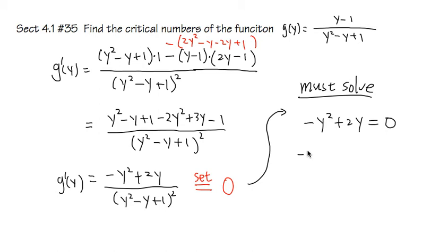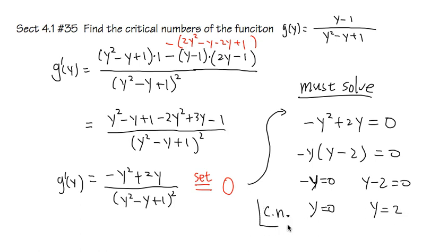Solve this very easy. Factor out the -y: -y(y-2)=0. And you get -y=0 or y-2=0. So the first part, you get y=0, and this part you get y=2. And here are the critical numbers.